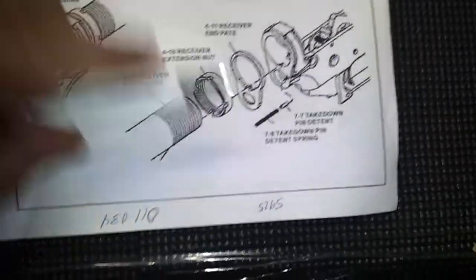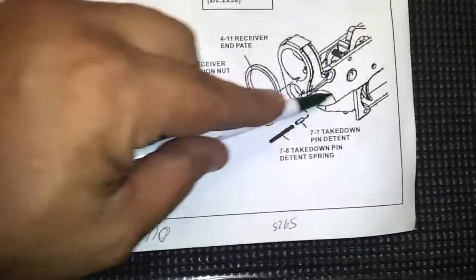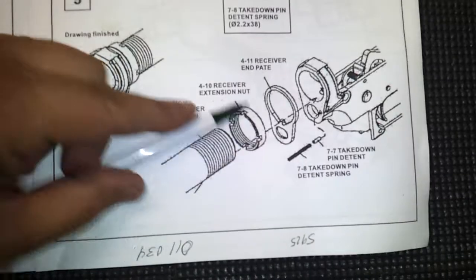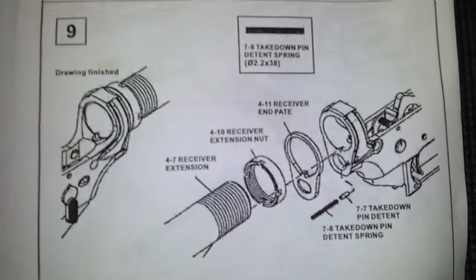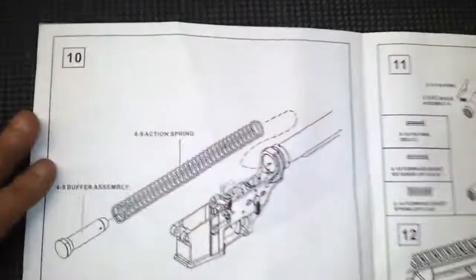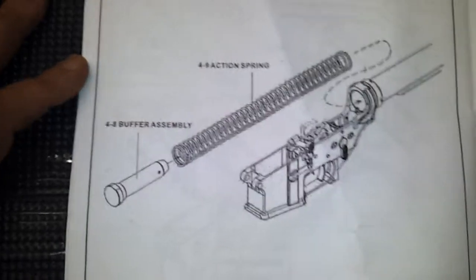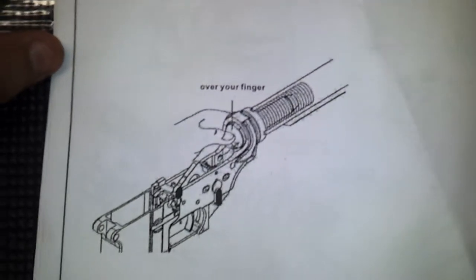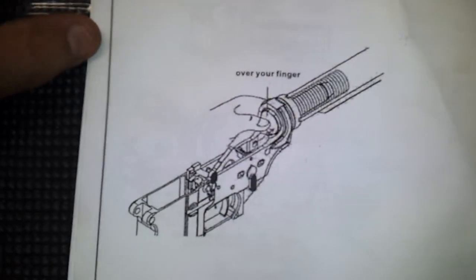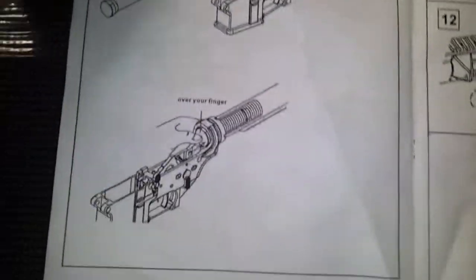Now this detent right here is going to go back and help with your takedown pin and retain it. There's a spring there, don't lose it. It's showing you how to put the buffer in the buffer spring, the buffer spring in the stock pipe or buffer tube.